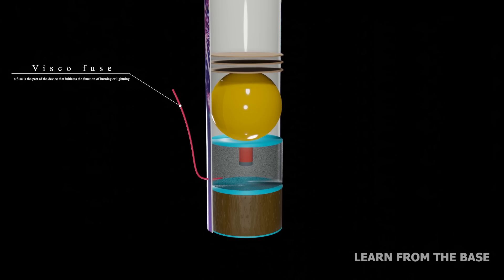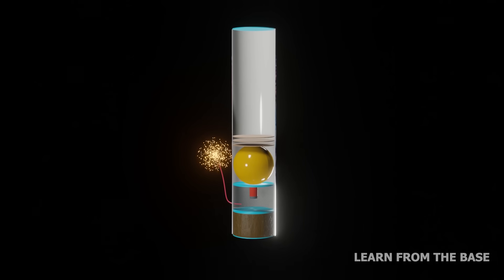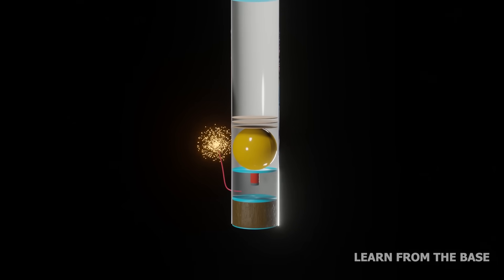This is the visco fuse that initiates the function of burning. It is used to create a delay of time in the firing.